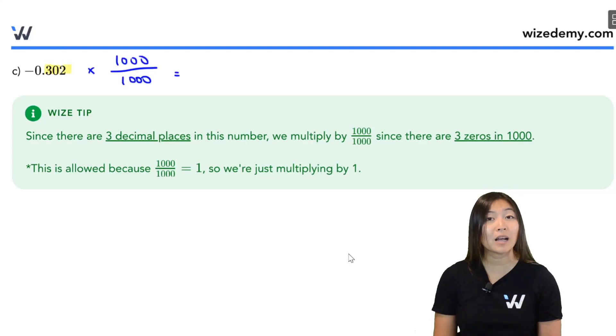So hopefully, you multiplied by 1,000 because there's three decimal places. We need three zeros. Since it's a negative, I'm going to just write the negative out front. In the denominator, I have 1,000. In the numerator, I'm just going to trade one decimal place for one zero, another decimal place for another zero, and so on.